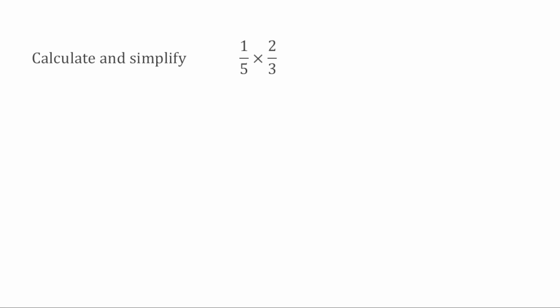For this first question we've got to calculate and simplify 1 over 5 multiplied by 2 over 3. Because we've got to simplify it, we're going to see if we can cross-cancel any of these numbers. We go diagonally across the fractions from the numerator of one fraction to the denominator of the other and see if we've got a highest common factor greater than 1. For 1 and 3 the highest common factor is 1, so we can't do anything there. Looking across at the 5 and 2, the highest common factor is also 1, so we can't cancel them down. So we're just going to multiply it through. Starting with the numerators we've got 1 multiplied by 2 which gives us 2, and then we have 5 multiplied by 3 which gives us 15. So our answer to this first one fully simplified is 2 over 15.